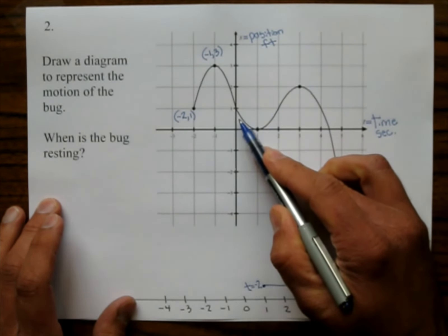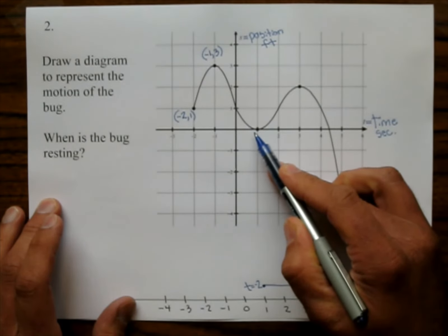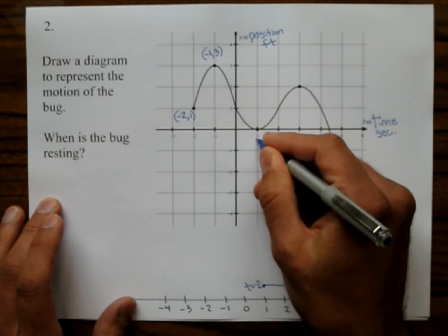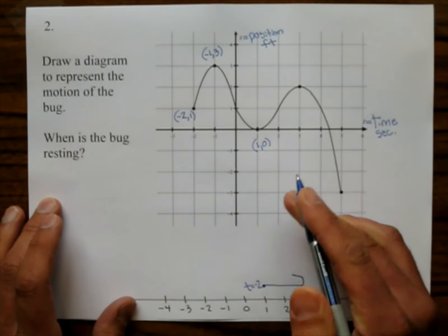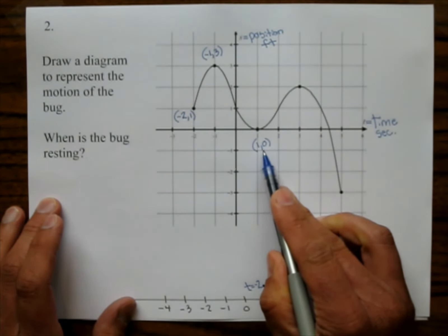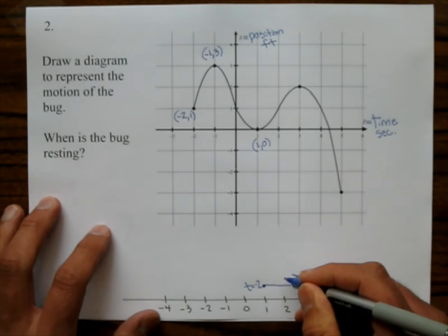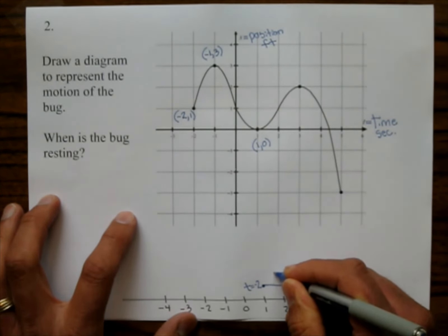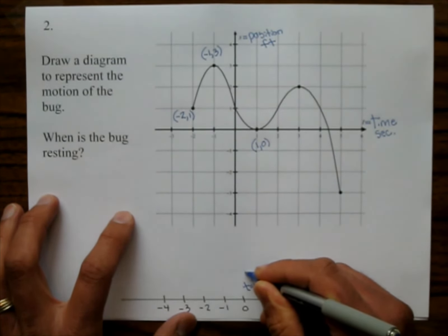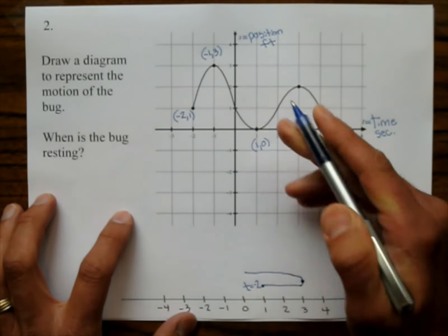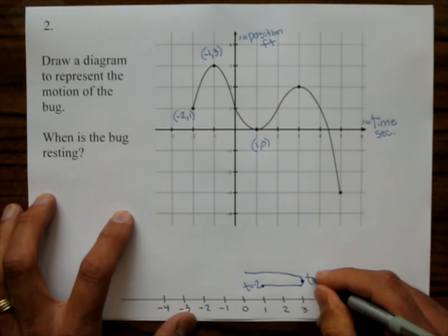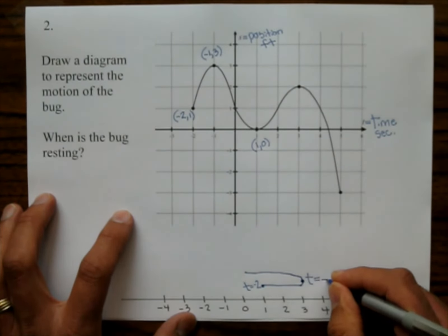And what happens? Well, we come all the way to this point, which is 1, 0. At 1 second, the bug is at 0. So I'm going to make this diagram go all the way to 0. And his turnaround time was negative 1. So I'll go t equals negative 1.